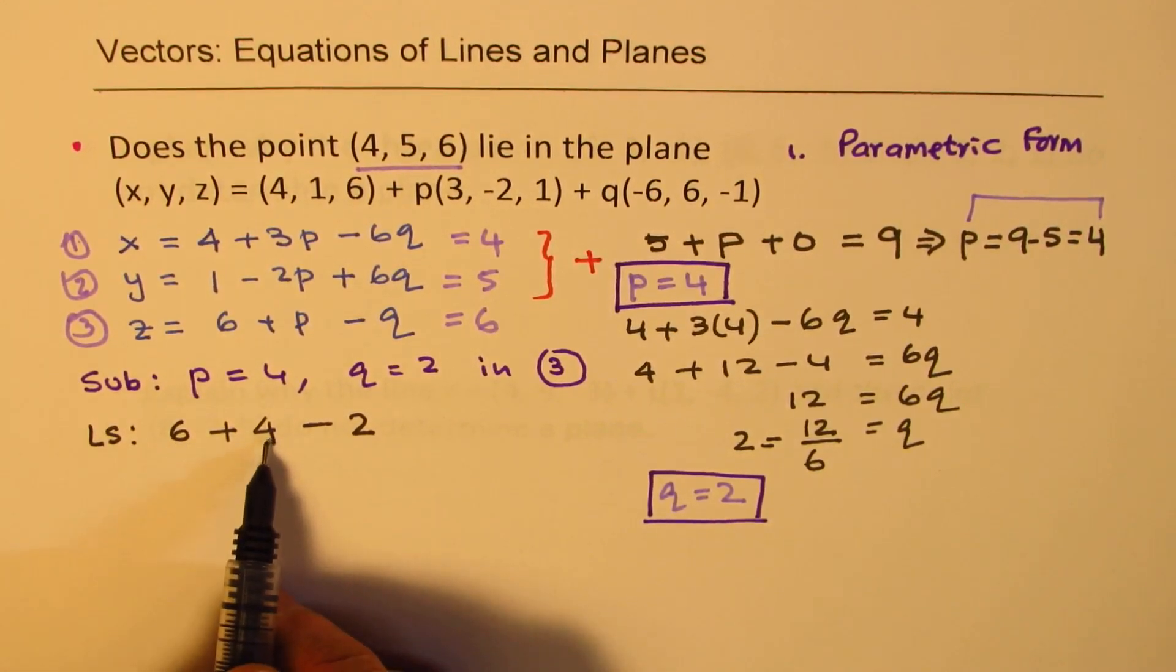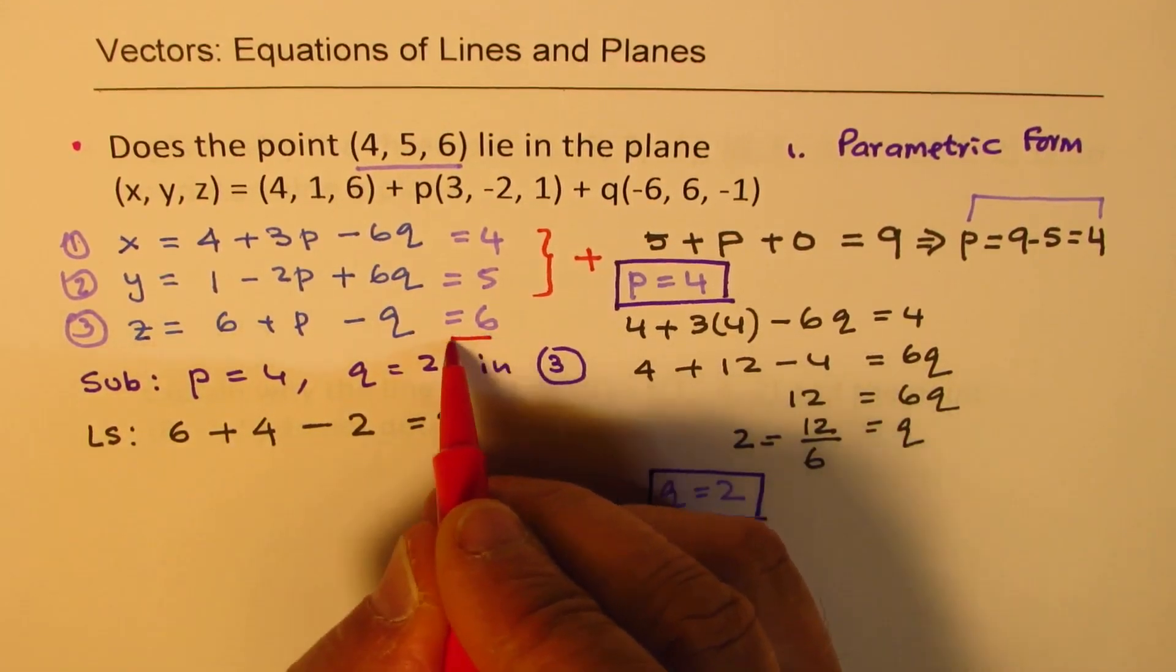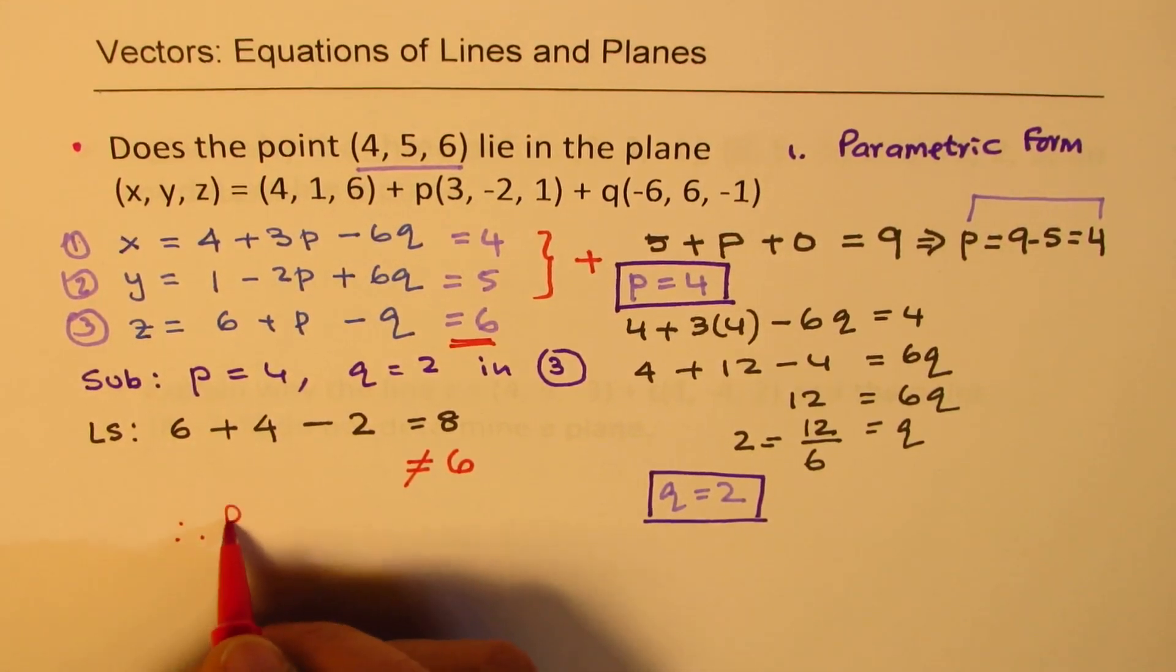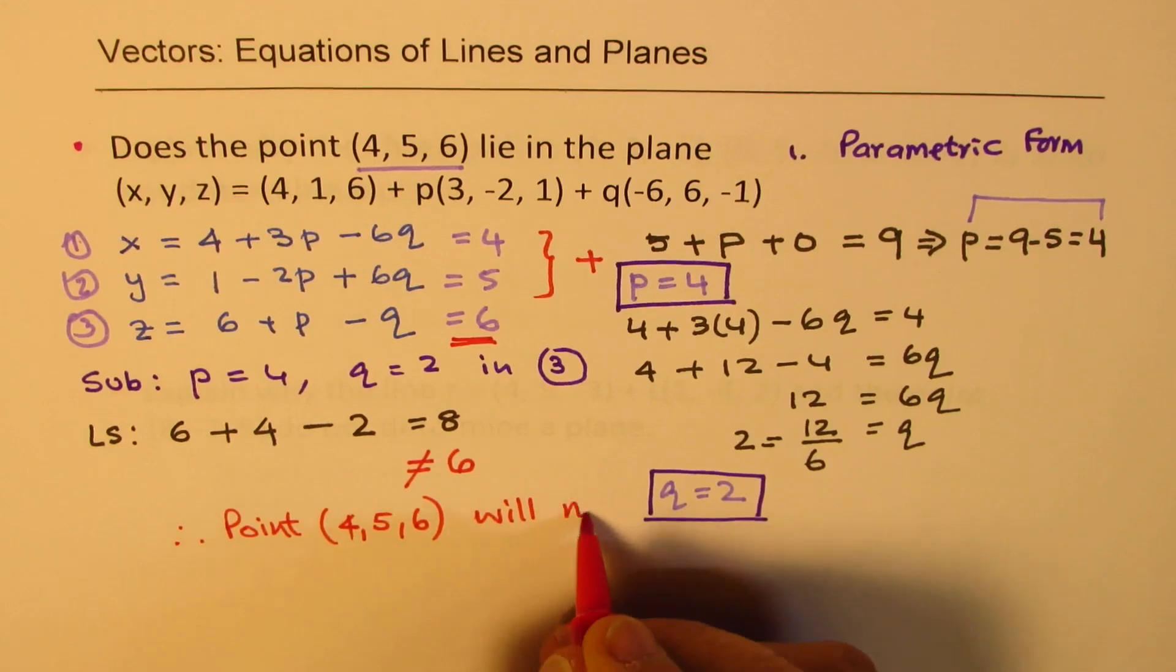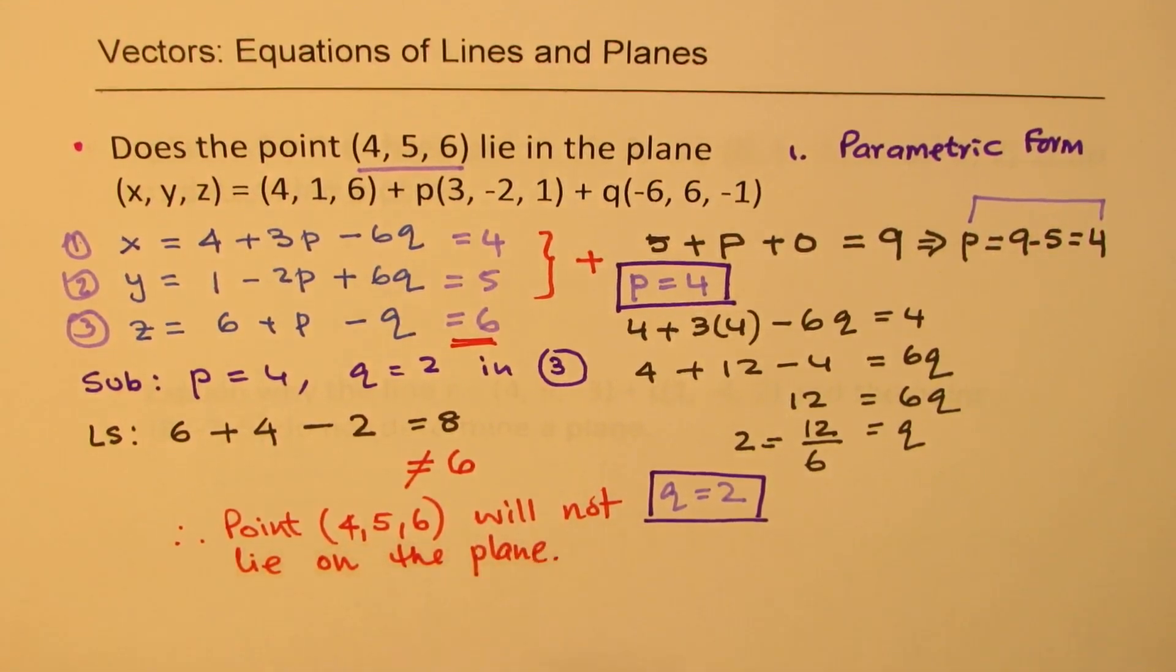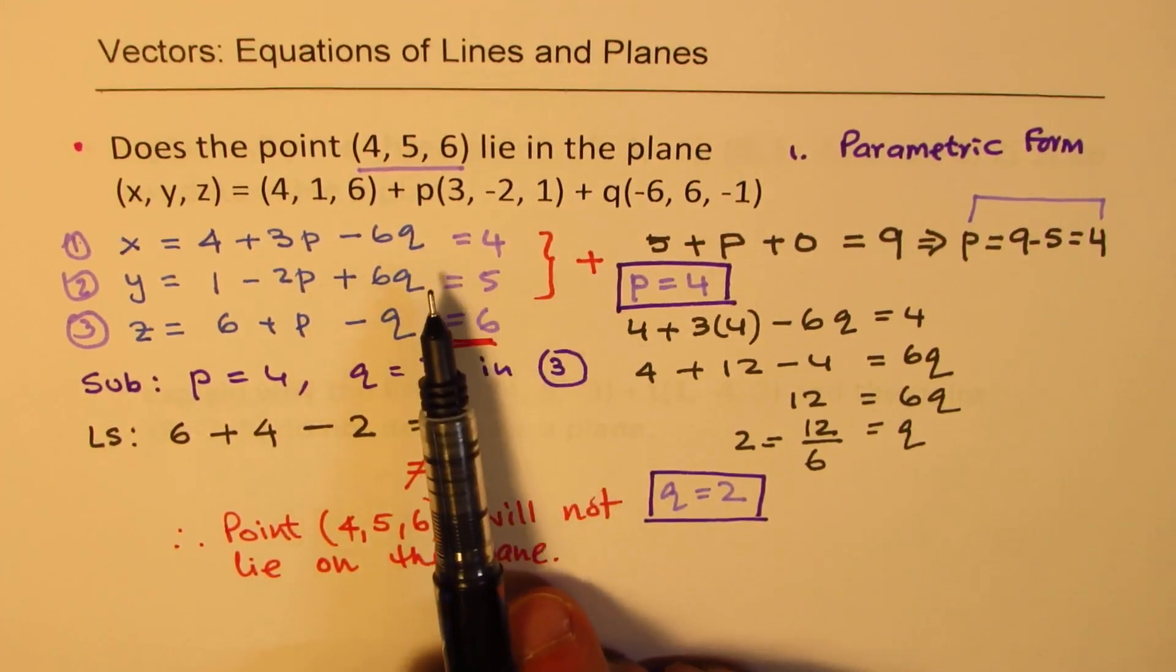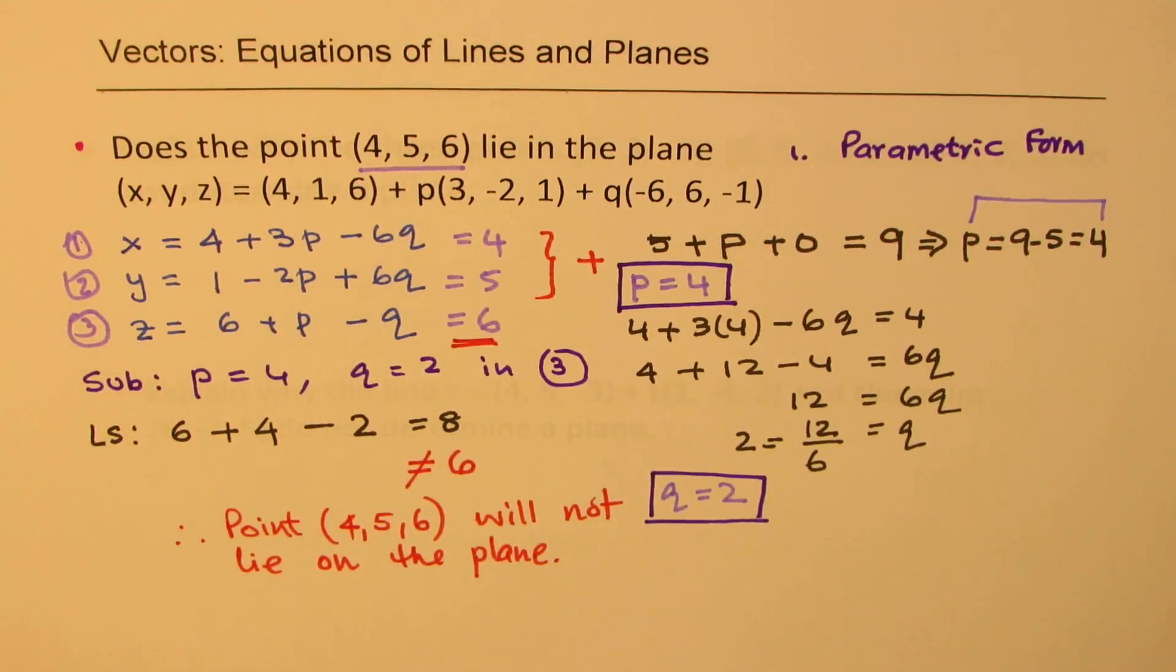So the equation is 6 + p value, or I am writing as 4, minus q value as 2. So 4 + 6 is 10, minus 2 actually gives us 8. We wanted 6. Since it is 8, which is not equal to 6, so we say that the point (4, 5, 6) will not lie on the plane. So that is how you are going to explain. I have cut down on some steps, but I have explained them. In your test, you have to write each step separately. Now let's take up the next question.